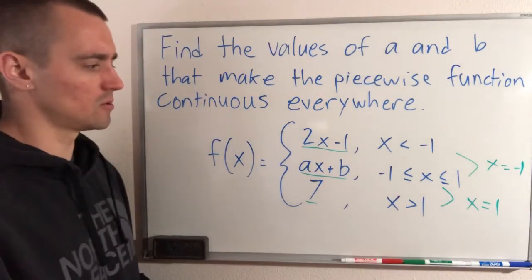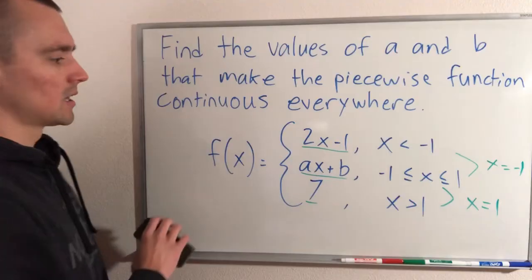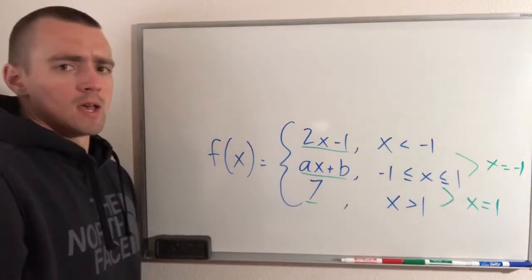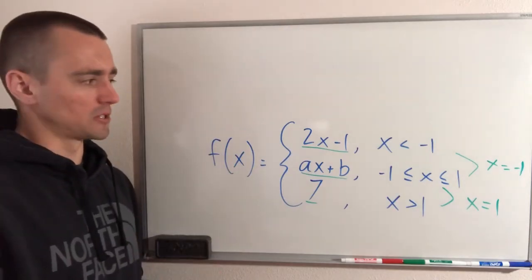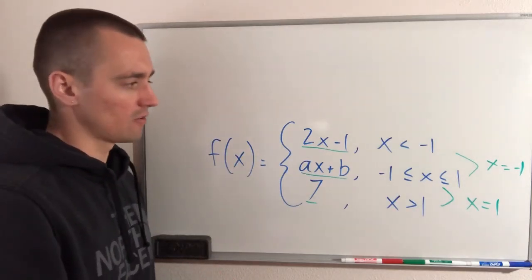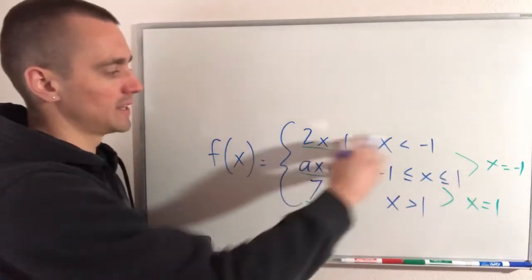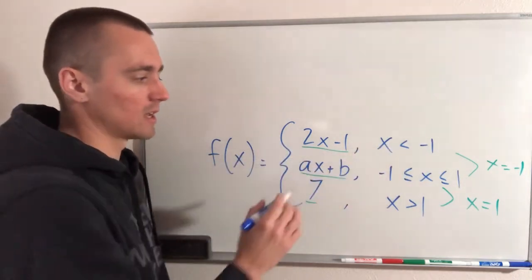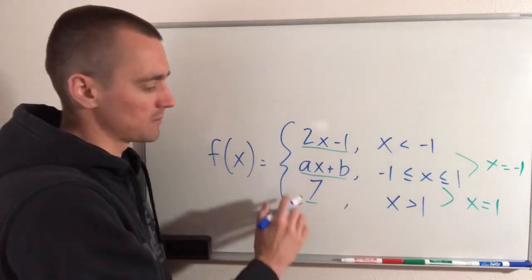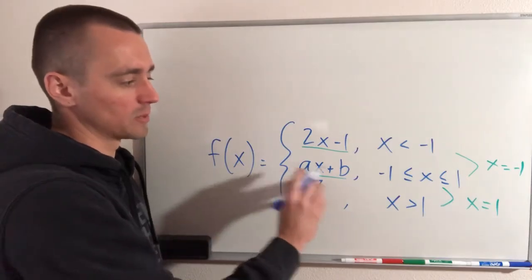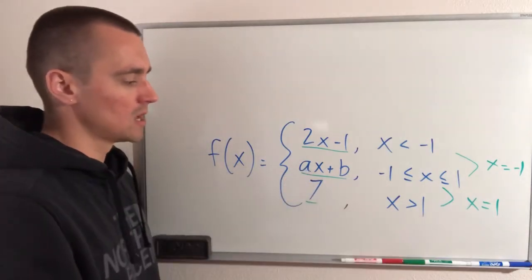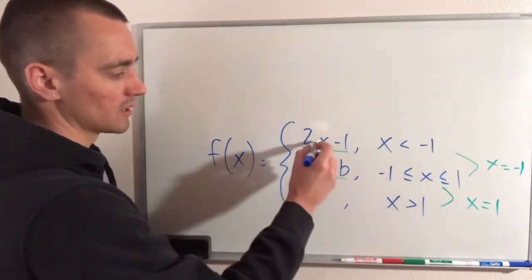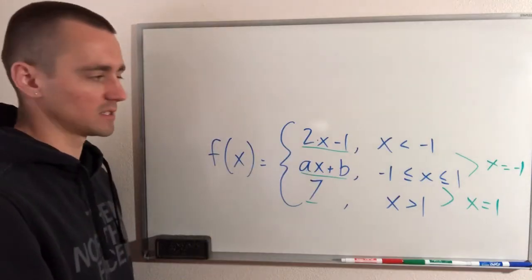All we have to do is consider the height — meaning the output — of each function at those transition points. When the input is x = −1, we need to make sure the two neighboring functions have the same output so they line up when we switch between them at x = −1. Likewise, we need the two functions on either side of x = 1 to have the same output at that point. So we'll plug x = −1 into the first two functions and set them equal.